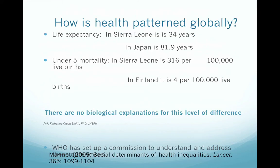As an example, life expectancy in Sierra Leone is 34 years while in Japan it's 82. Similarly, under-5 mortality in Sierra Leone is 316 per 100,000 live births and in Finland it's 4 per 100,000. These differences are not biologically explainable — it's not that human beings in Sierra Leone are different from those in Japan or Finland. There are very clear societal and structural reasons, and it's differences like these that make us need to question what is happening upstream.